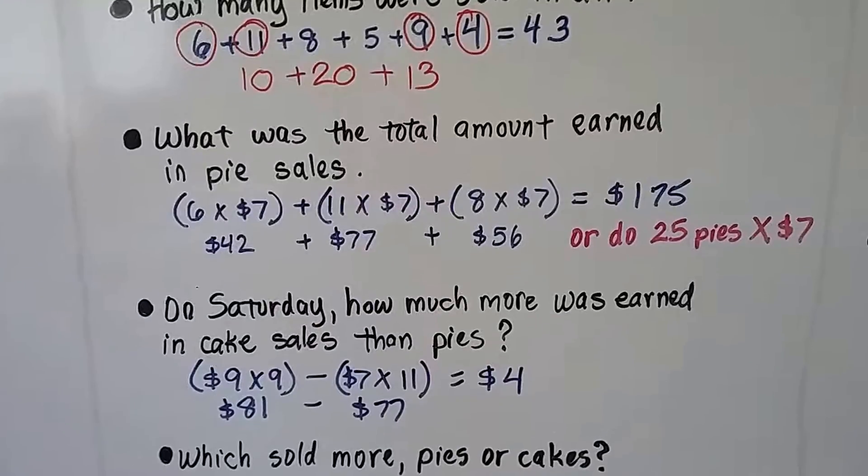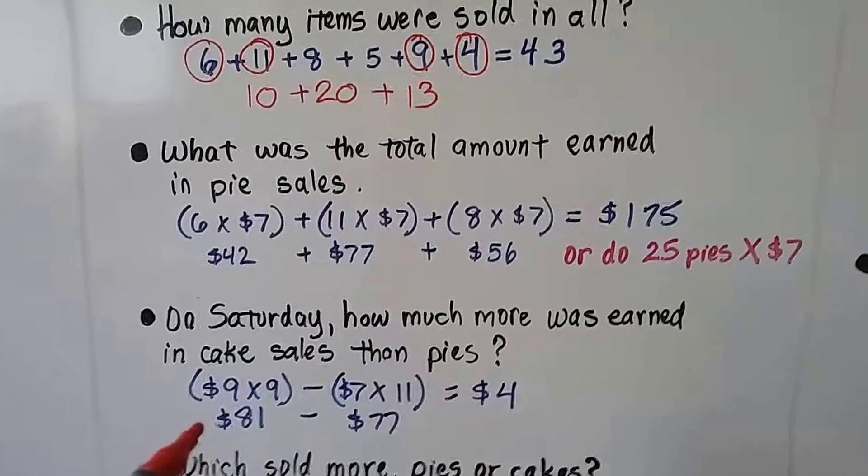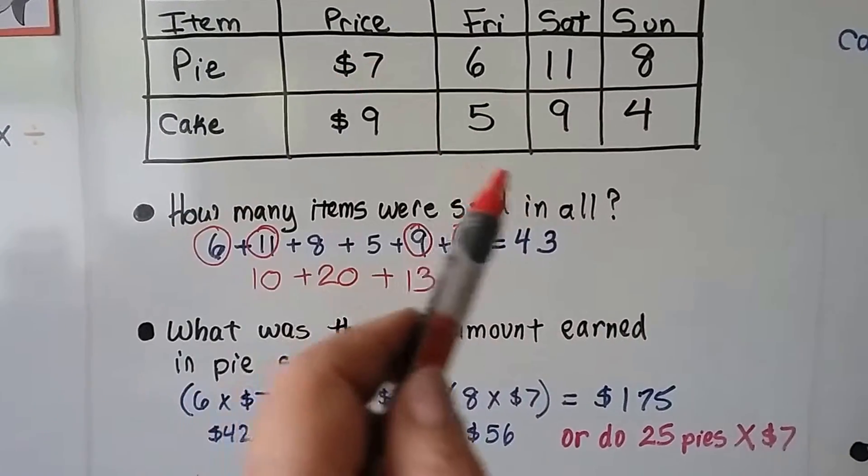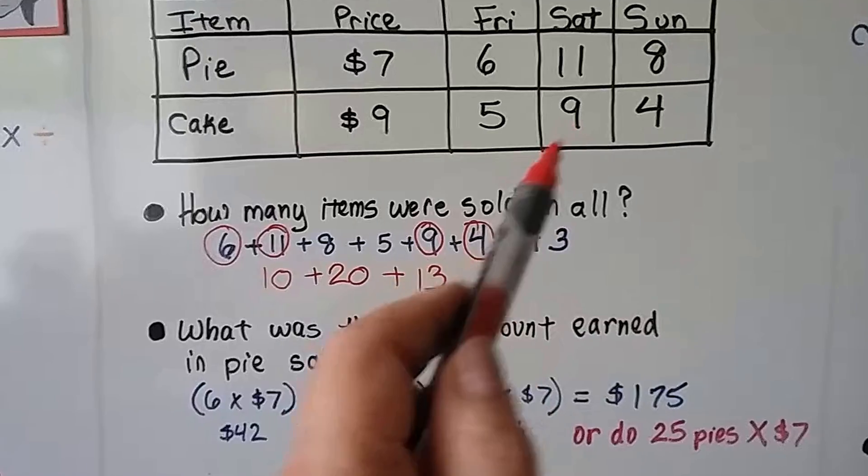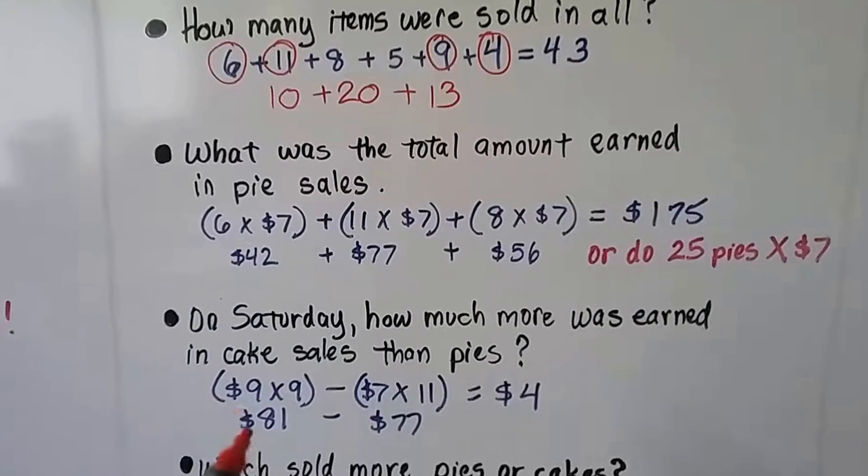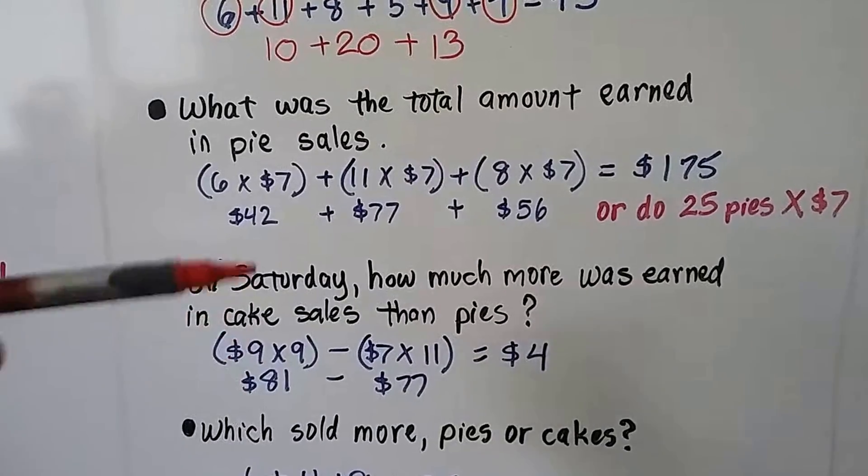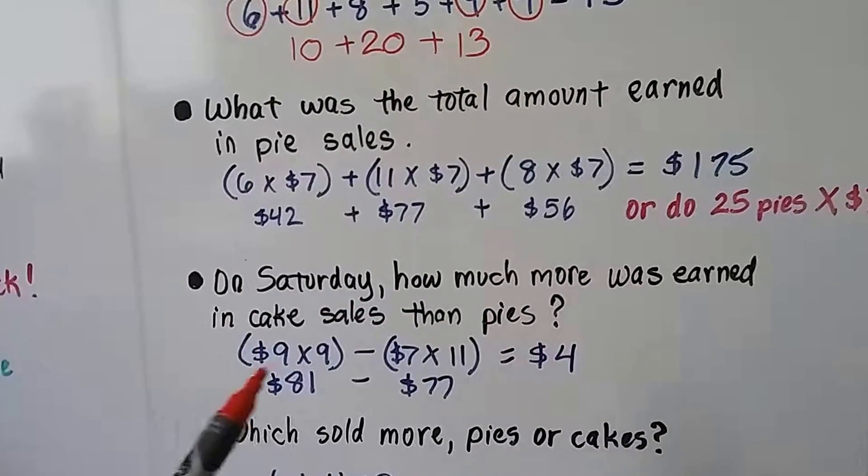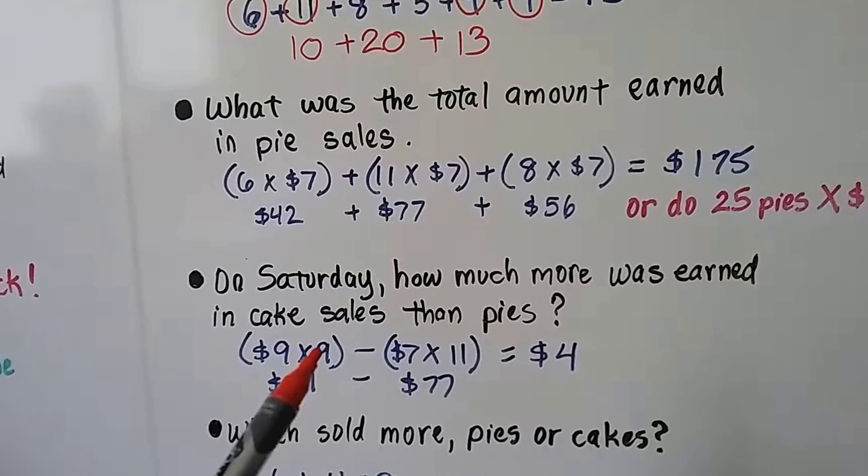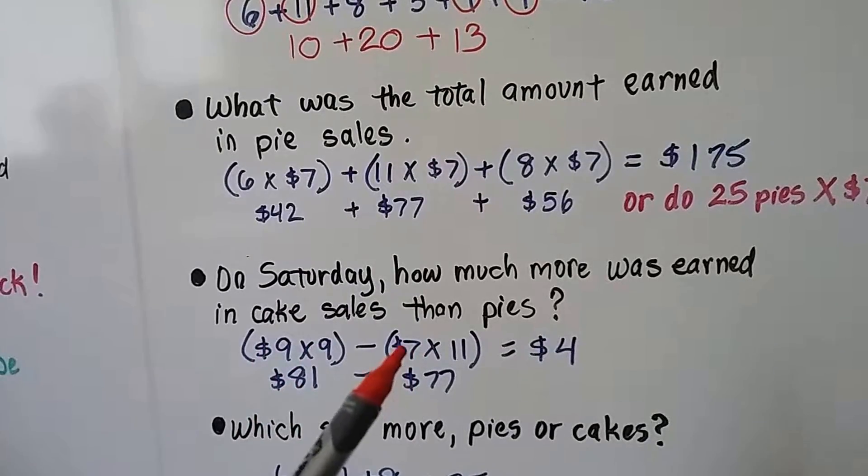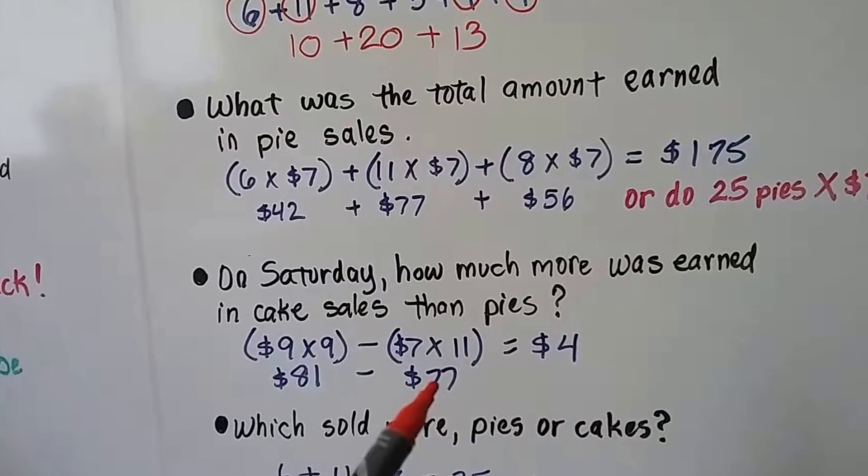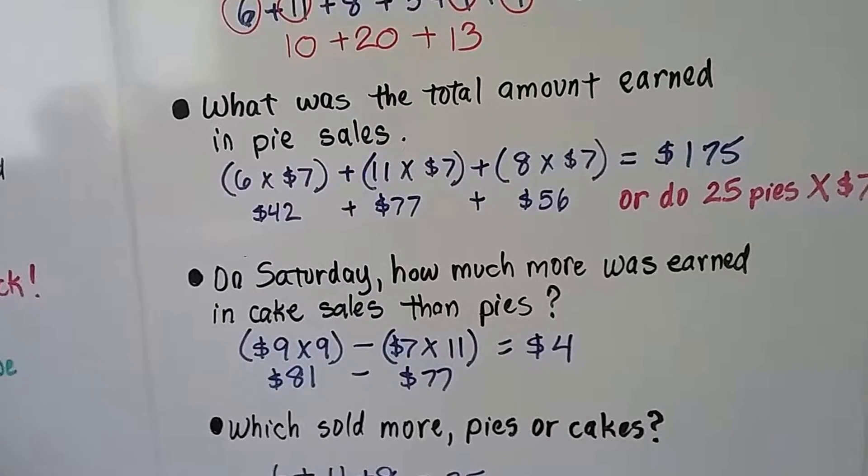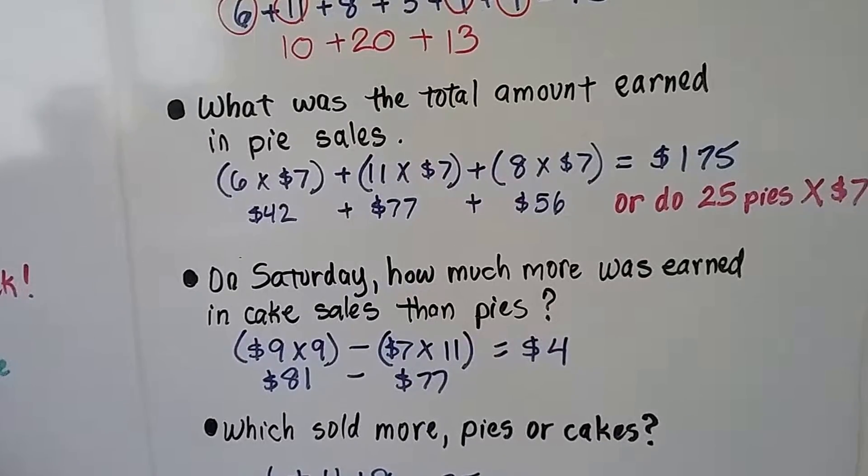On Saturday, how much more was earned in cake sales than pies? On Saturday, there were 11 pies at $7 each, and on Saturday, there were 9 cakes at $9 each. We need to compare the sales between cakes and pies. $9 times 9 cakes is $81, and $7 times 11 pies is $77. 81 minus 77 is $4. So, how much more was earned in cake sales? $4.